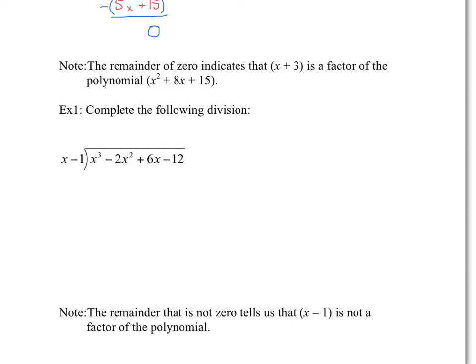Let's do one more long division for practice. First, take the leading term x cubed and divide by x. Note that the terms should be in decreasing degree: x cubed, x squared, x, and the constant. So x cubed divided by x gives x squared. Then multiply x squared times x and x squared times negative 1, giving x cubed minus x squared.